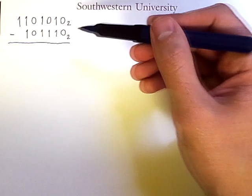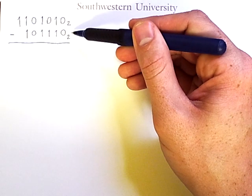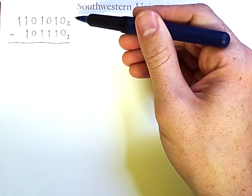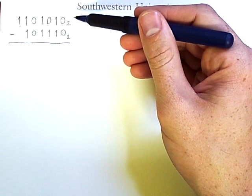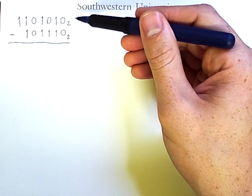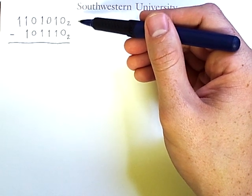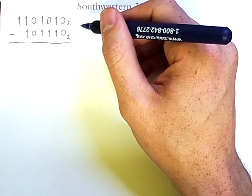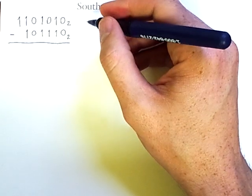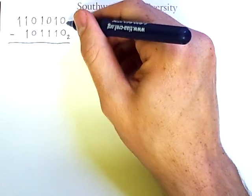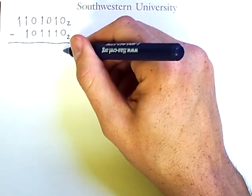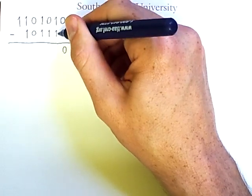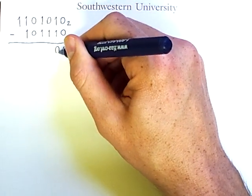If we wanted to subtract a small binary number from a larger binary number, the process would be fairly straightforward and very similar to subtraction in decimal. We would simply go column by column and compute the result. 0 minus 0 is 0, and 1 minus 1 is 0.